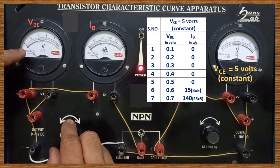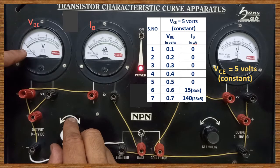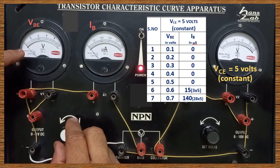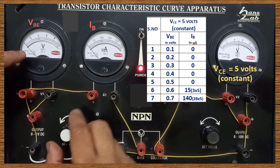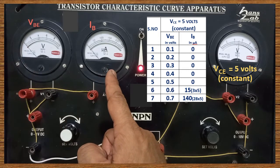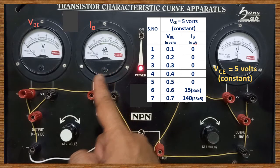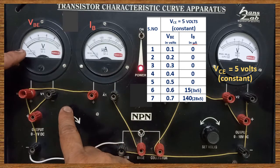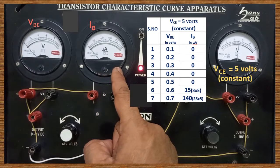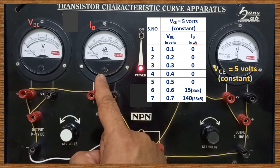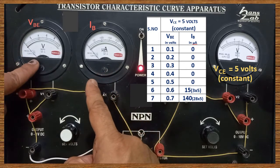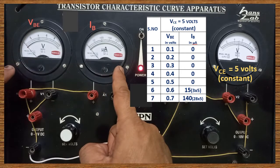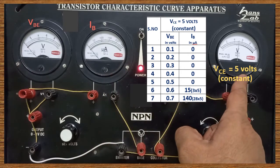VBE means voltage across base and emitter. That should be varied. IB is called base current. The voltage across base and emitter VBE must be altered, and the corresponding variation in the base current IB is to be noted. VBE should be altered, IB should be noted, and VCE should be kept constant.